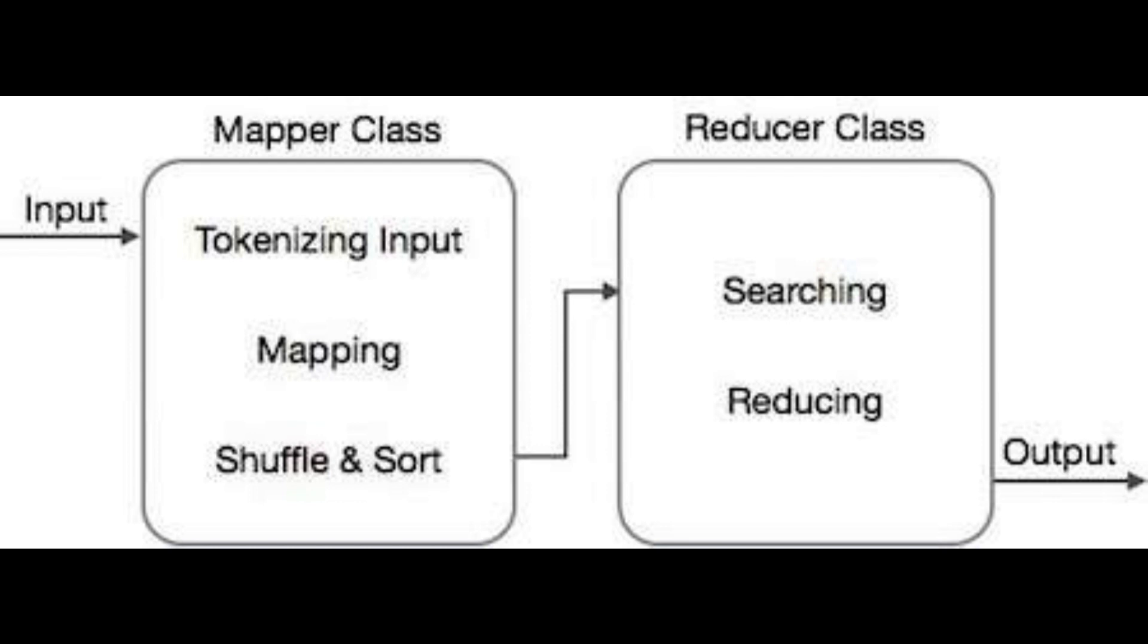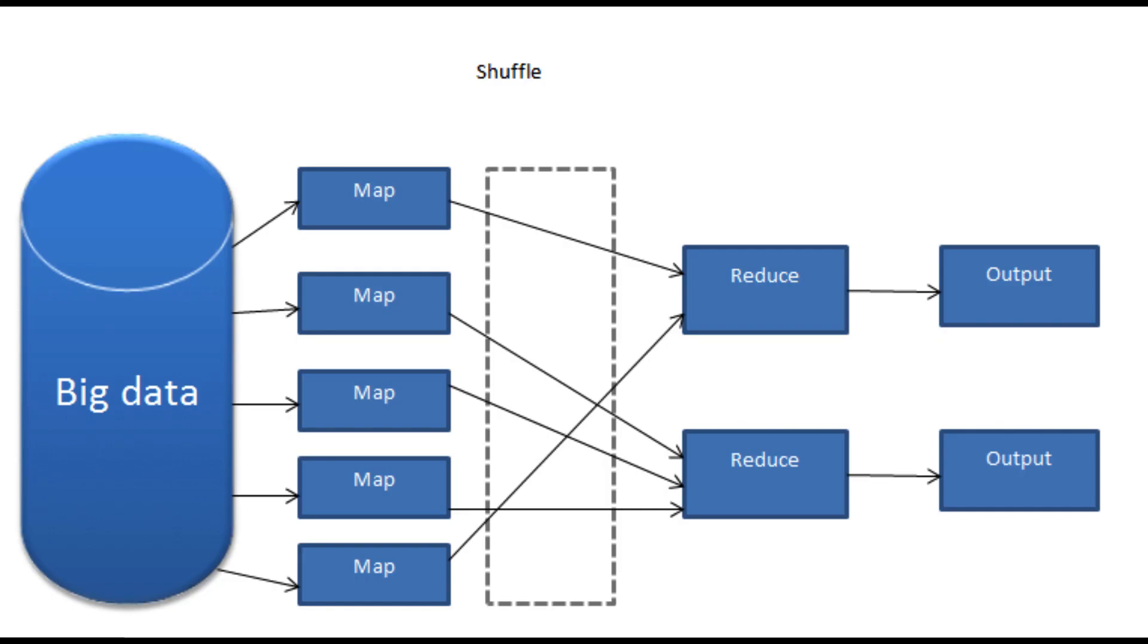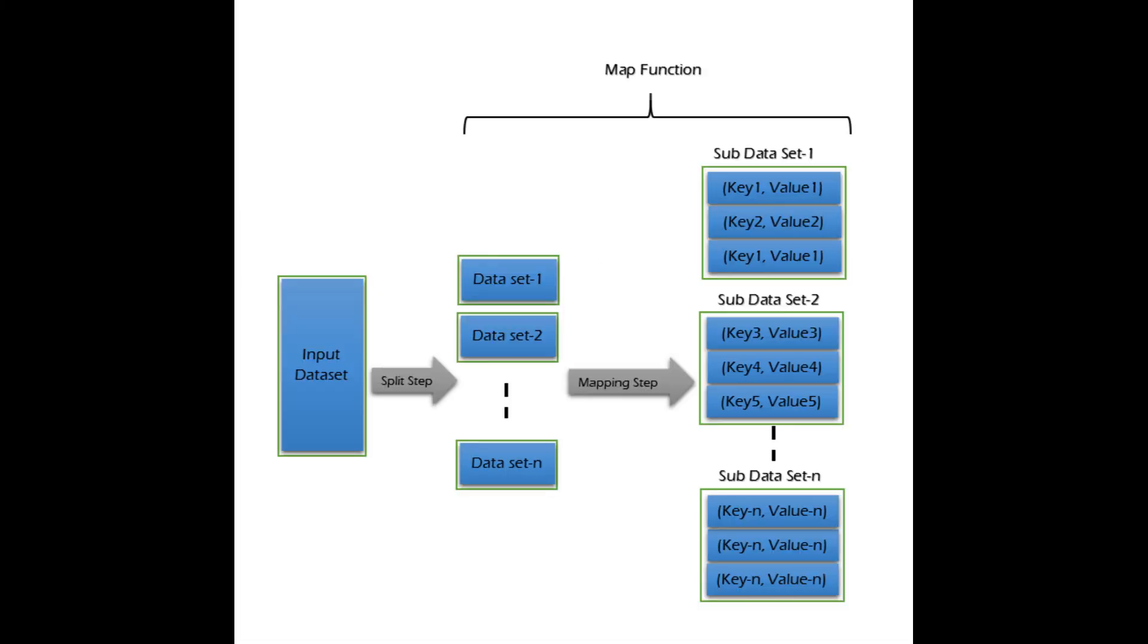Map Phase: Input data is divided into smaller chunks which are then assigned to different worker nodes in the cluster. The worker nodes apply a user-defined map function to each chunk of data independently. The Map function processes the input data and produces a set of intermediate key-value pairs. These intermediate key-value pairs are then grouped and shuffled based on their keys to prepare them for the next phase.